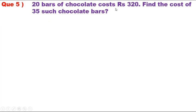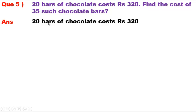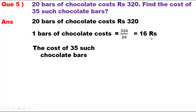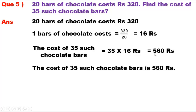Question 5. 20 bars of chocolate cost Rs. 320. Find the cost of 35 such chocolate bars. Answer. Cost of 1 bar of chocolate = Rs. 320 / 20 = Rs. 16. Cost of 35 chocolate bars = 35 x Rs. 16 = Rs. 560. Therefore, the cost of 35 such chocolate bars is Rs. 560.